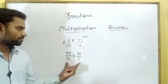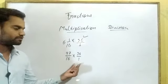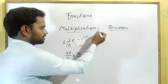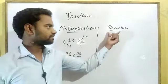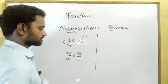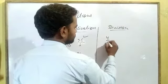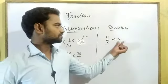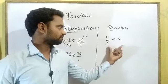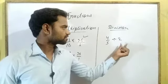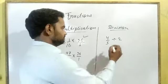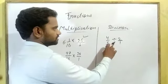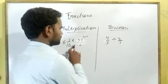This is the multiplication relation of these two fractions, and now we can easily multiply. In the other process — division — if we have to divide two given fractions, suppose we have 4 upon 5 divided by 2. It means 2 is a whole number, but in the process of fractions, convert this whole number into fraction form — this will be 2 upon 1. Now, this is division, not multiplication.